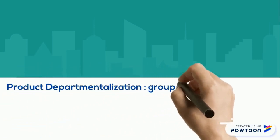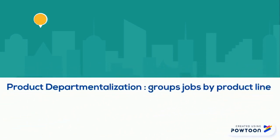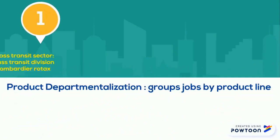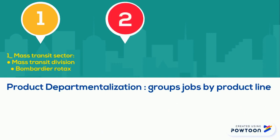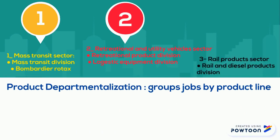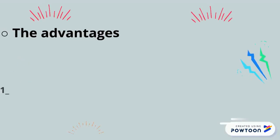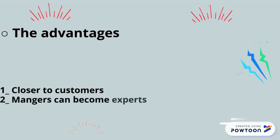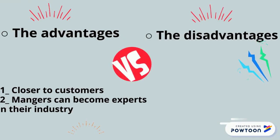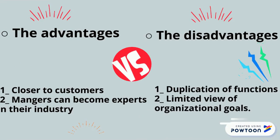Product departmentalization groups jobs by product line. Bombardier Limited: first, Mass Transit Sector, divided into Mass Transit Division and Bombardier Road; second, Recreational and Utility Vehicles Sector, consisting of Recreational Products Division and Logistic Equipment Division; third, Rail Products Sector, which is Rail and Diesel Products Division. The advantages: 1. Closer to customers. 2. Managers can become experts in their industry. The disadvantages: 1. Duplication of functions. 2. Limited view of organizational goals.